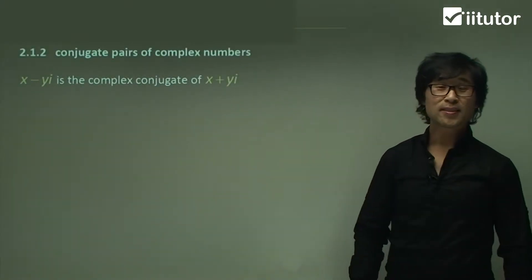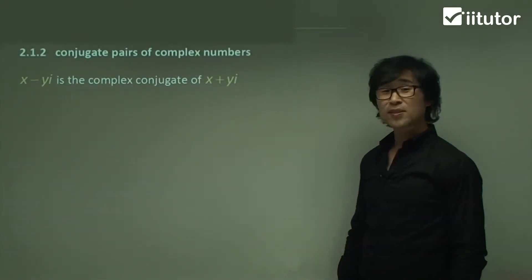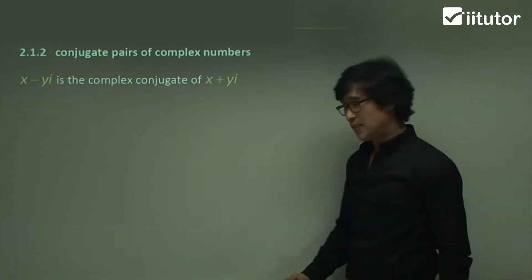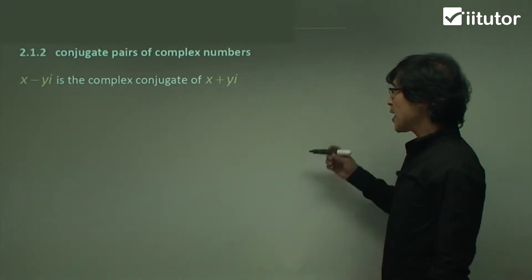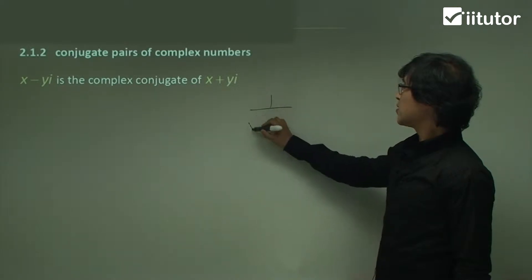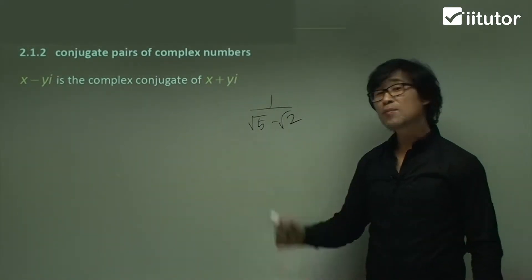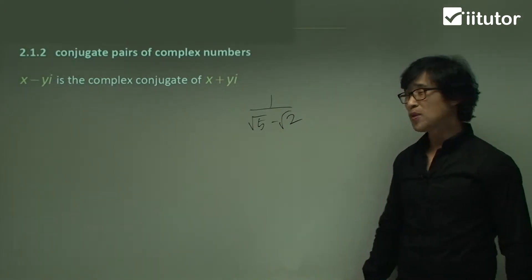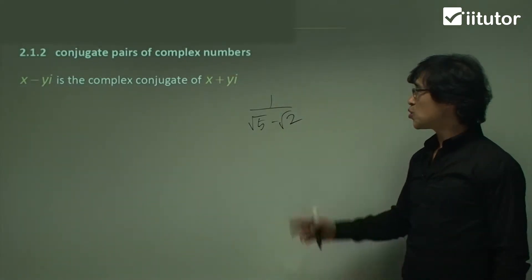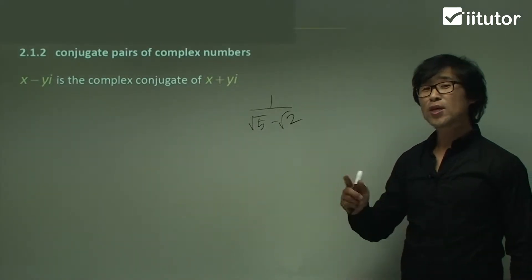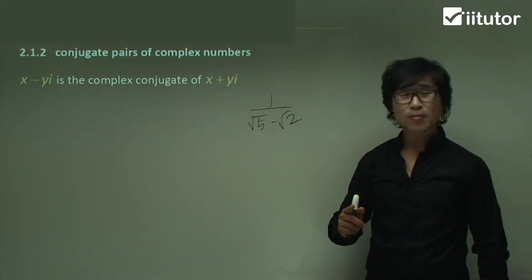The second topic, second lesson of the complex number is to cover about the conjugate pairs. Conjugate pairs is not a brand new name for you. For example, we did use this one, square root of 5 minus square root of 2. Do you remember this sort of question? Usually the question was asking you to simplify this fraction by rationalizing the denominator.